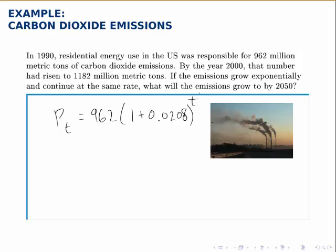Here's the full model where p sub 0 is 962 because that's the amount in 1990, which we've taken as our year 0. R is filled in with the value that we found, and now we can plug in any value for t and predict what the emissions will be in that year.